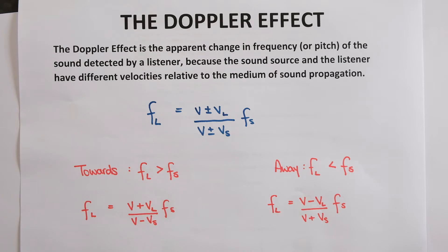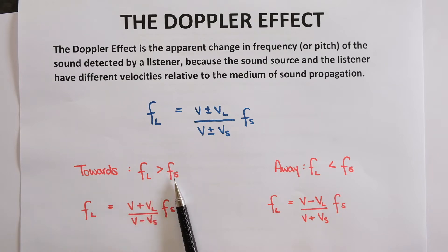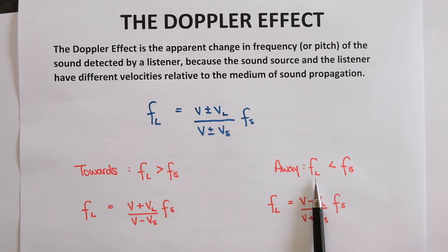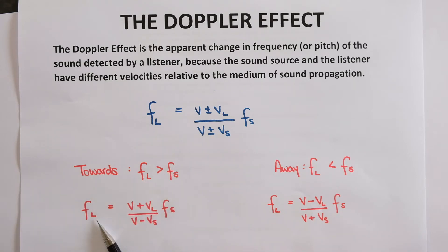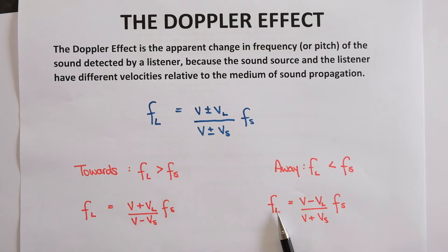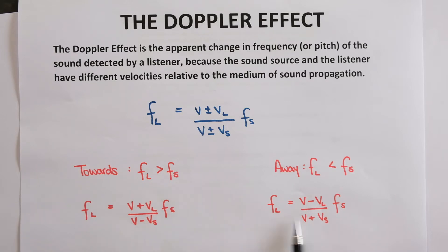If an ambulance is moving towards you and you are stationary, you will perceive a higher frequency or pitch than the actual frequency of the source. Once the ambulance has passed you and is moving away, you will perceive a lower frequency than the frequency of the source. To apply this equation: if you want a higher frequency perceived by the listener, add the top and subtract the bottom. If the object is moving away and you perceive a lower frequency, subtract the top and add the bottom. If you can remember these two equations, you should be fine with these calculations.